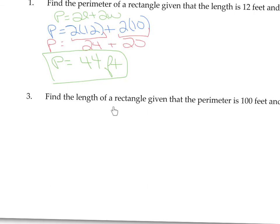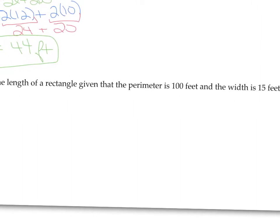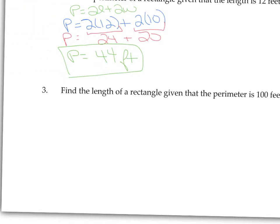Find the length of a rectangle given that the perimeter is 100 feet, and the width is 15 feet. So again, we're working with perimeter of a rectangle here. So we're going to use the same formula.